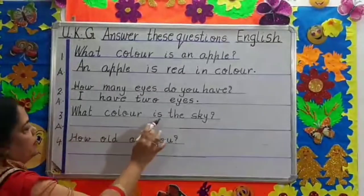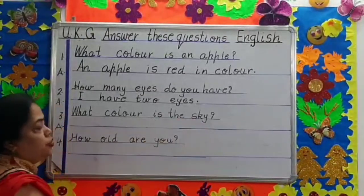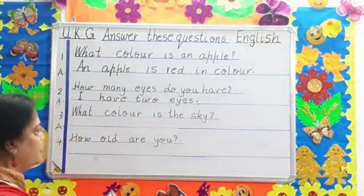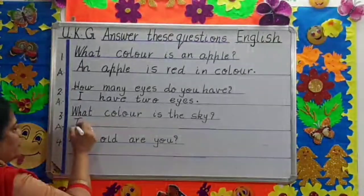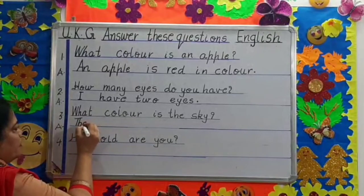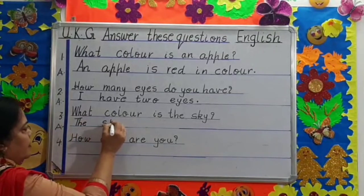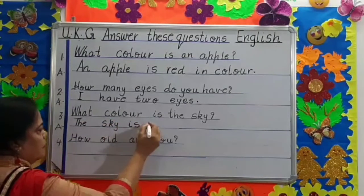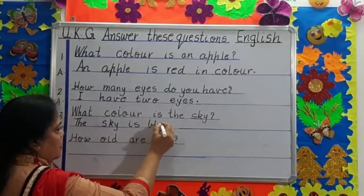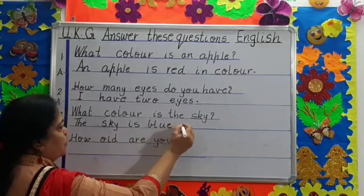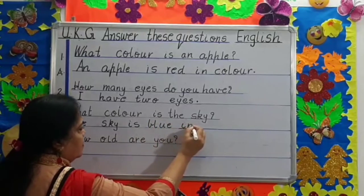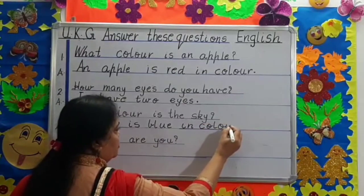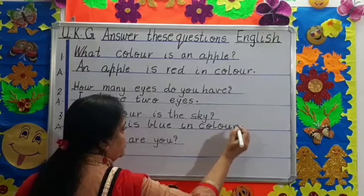What color is the sky? Children, what color is the sky? The sky is blue in color. C-O-L-O-R, color. Full stop. Answer: The — first letter T, capital — the sky is blue in color. Full stop.